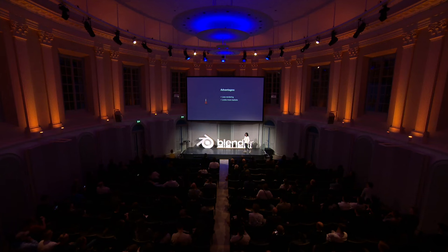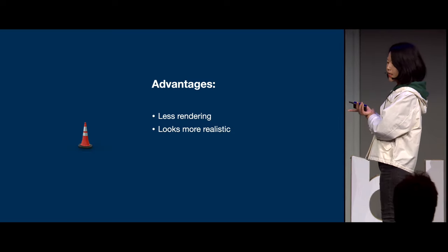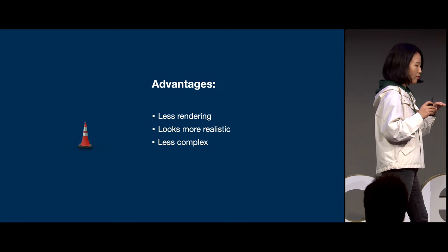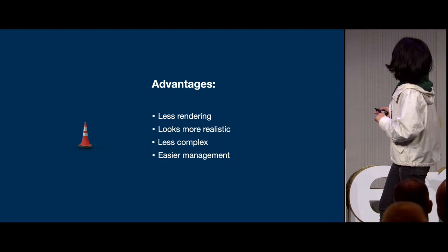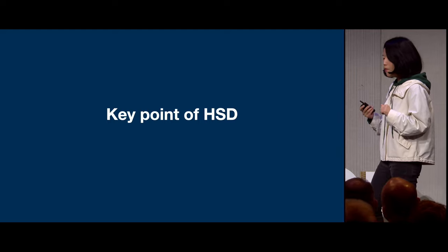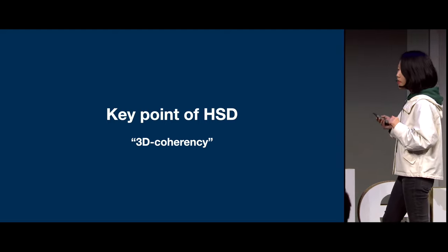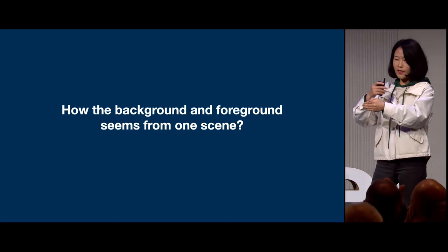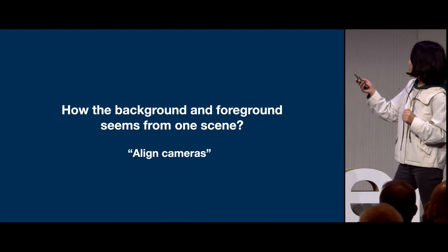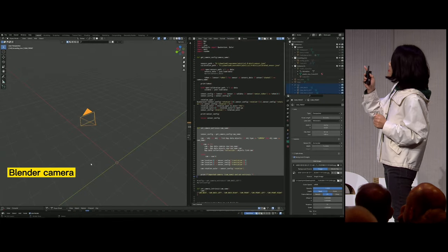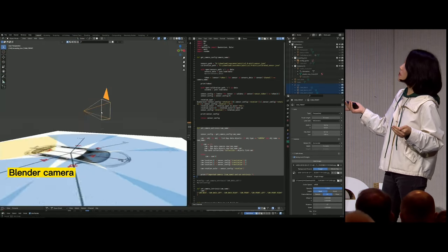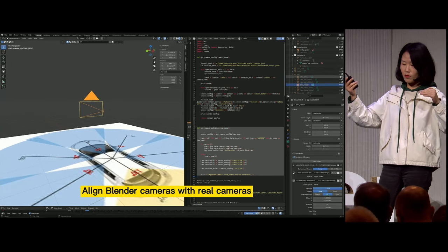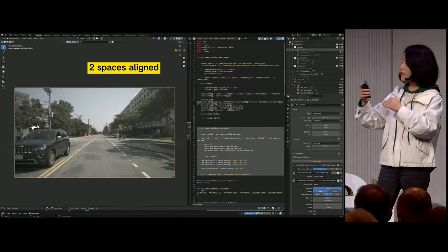The clear advantage of hybrid synthetic data is that it uses less rendering, looks more realistic, and the scene is less complex — making project management easier. A key point about HSD is 3D coherency: how does the foreground look like it comes from the same scene as the background? The secret is aligning cameras. If we set the Blender camera's position, rotation, and other parameters based on the real camera configuration, we can imitate how the real camera sees the world — effectively aligning the two worlds.